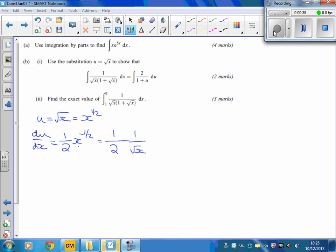So if you just rewrite that neatly at this stage before you start working with it: 1 over 2 root x. Now we're always trying to rearrange this to get dx all on its own. So the dx goes up there, and this goes up there. We get 2 root x times du. That's what dx is the same as. I know it's a little bit different than some of the examples we do in class.